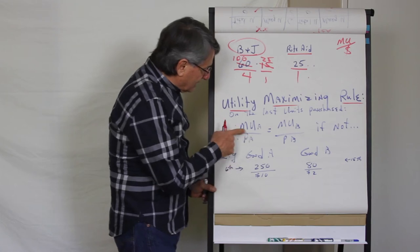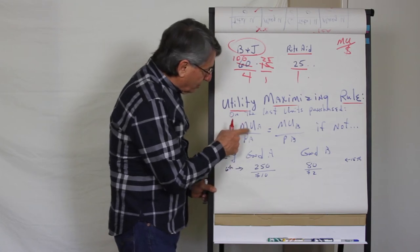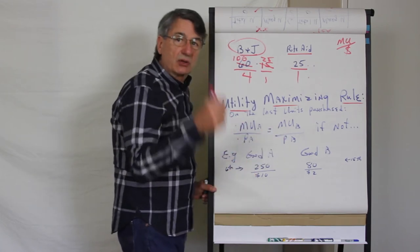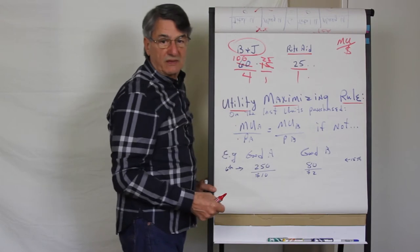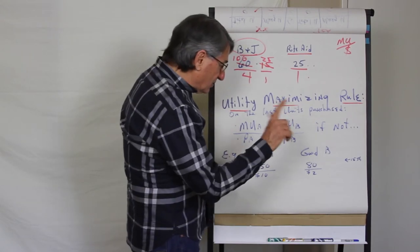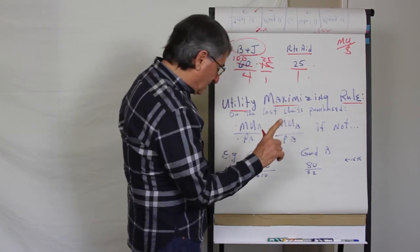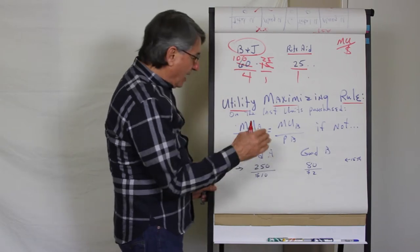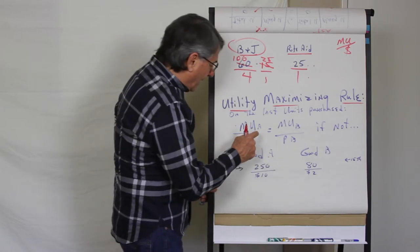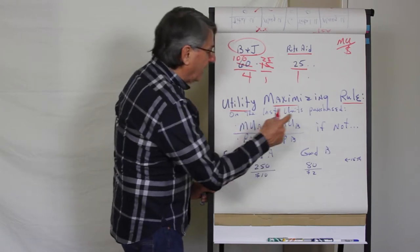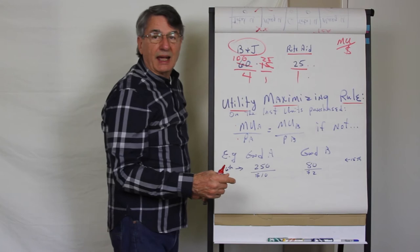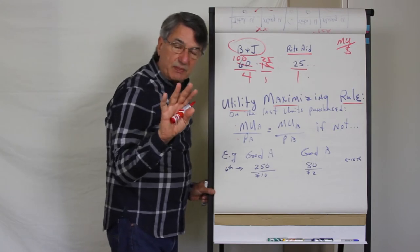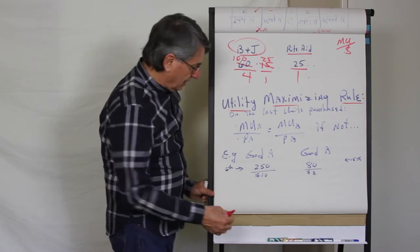What this really means is that the marginal utility per dollar rates are equal on the last units purchased of each good. If this condition is not satisfied, then it's possible to switch and buy less of one and more of another, and with the same amount of money spent get more total utility.